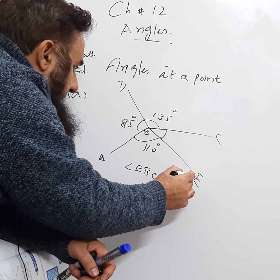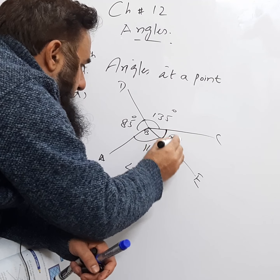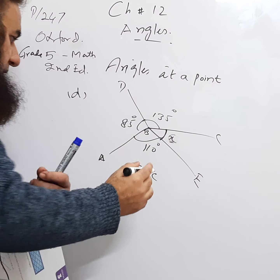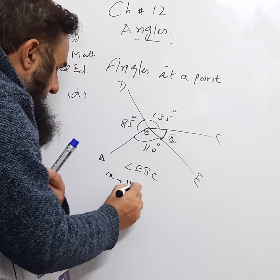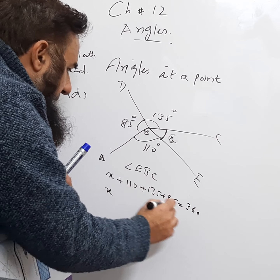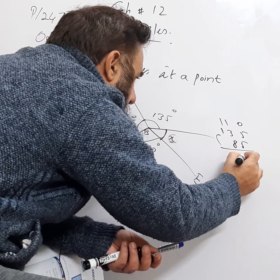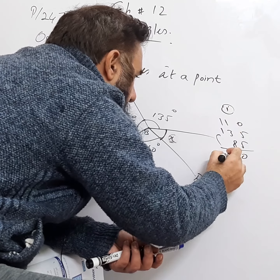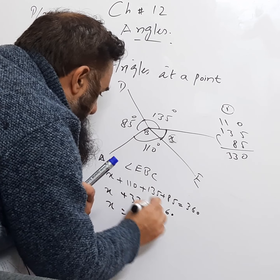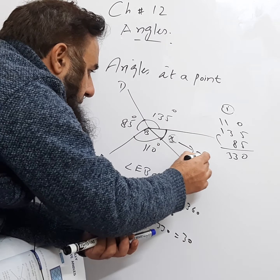This is also angles at a point forming a complete circle equal to 360°. So x plus 110 plus 135 plus 85 equals 360. Adding 110, 135, and 85 gives 330. So x plus 330 equals 360, meaning x equals 360 minus 330, which is 30. Therefore x equals 30.